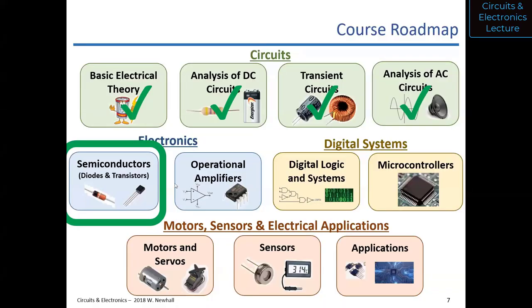We just finished up semiconductors — diodes and transistors — and this is the end of the material covered on exam two. We talked about diodes as the one-way valves of electrical current and transistors as a way to control a lot of current using a little current. You can use the low-power output of something like a microcontroller to control a lot of current through a servo or motor.